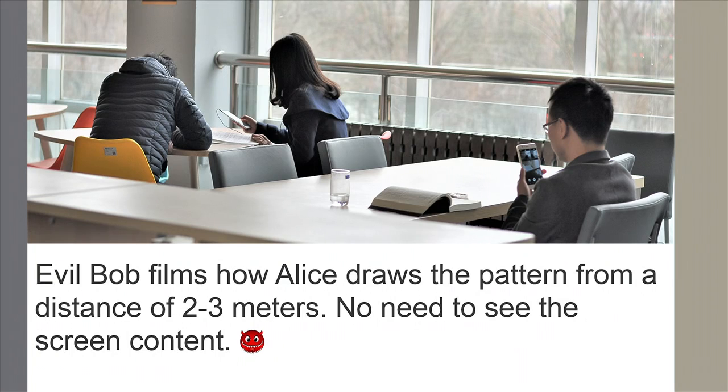Now, you may be wondering, how can Bob do this. So in our scenario, as shown in this picture, Alice is not aware of what is happening around, and Bob pretends to play his phone. But in fact, he's recording how Alice entered her pattern. So in the following, I will introduce how Bob can track Alice's fingertip movement.